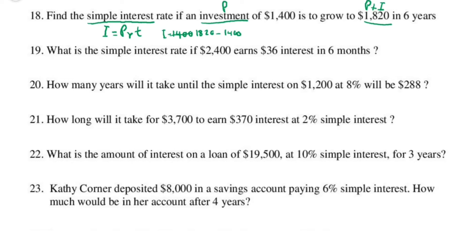So interest is 420. Time is 6 years. Find the simple interest rate. P is 1,400, r is unknown — write it as r over 100 — and t is 6.